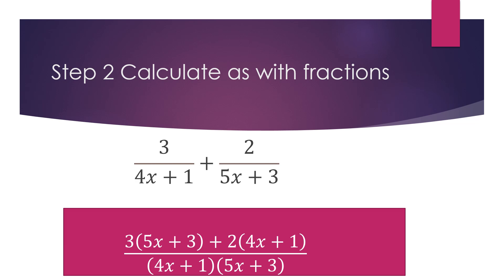Step 2 is to calculate the algebraic fractions. We divide (4x + 1) into the LCM to get an answer of (5x + 3). And then we divide (5x + 3) into the LCM to get an answer of (4x + 1). We then multiply 3 by (5x + 3) and multiply 2 by (4x + 1).